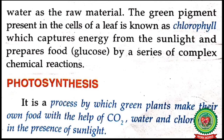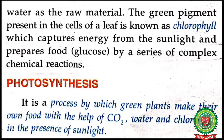The green pigment present in the cells of the leaf is known as chlorophyll, which captures energy from sunlight and prepares food by a series of complex chemical reactions. Photosynthesis is a process by which green plants make their own food with the help of carbon dioxide, water, and chlorophyll in the presence of sunlight.